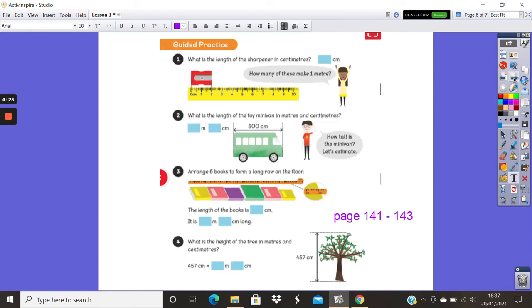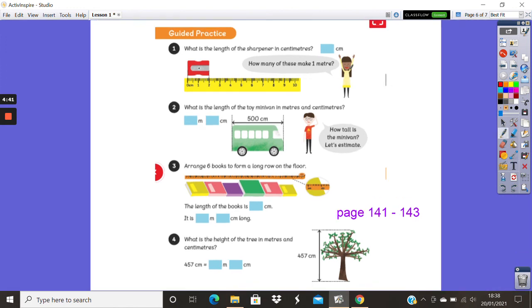Right, your guided practice. What is the length of the sharpener in centimeters? So when you are measuring things, it is really important to remember that you must always start from zero, not the beginning of the ruler because that wouldn't give us an accurate measurement. So this sharpener here starts on zero and finishes at two. So the length of that sharpener would be 2 centimeters.